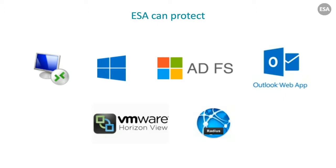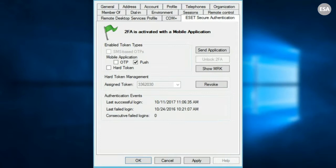ESA can protect standard Windows login, operating system login, anything through Active Directory Federated Services, and things like Office 365, SharePoint Online, the Outlook Web App, VMware Horizon View machines, or anything that's able to use RADIUS for authentication — so things like VPN or firewall logins.